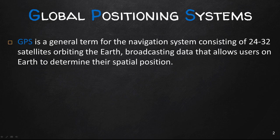GPS, or Global Positioning Systems, is a general term for the navigation system consisting of 24 to 32 satellites that are orbiting the earth, broadcasting data that allows users on the earth to determine their spatial position. GPS was originally intended for military applications, but in the 1980s the government made the system available for civilian use. GPS works in any weather condition, anywhere in the world, 24 hours a day, and there are no subscription fees or setup charges to use GPS.